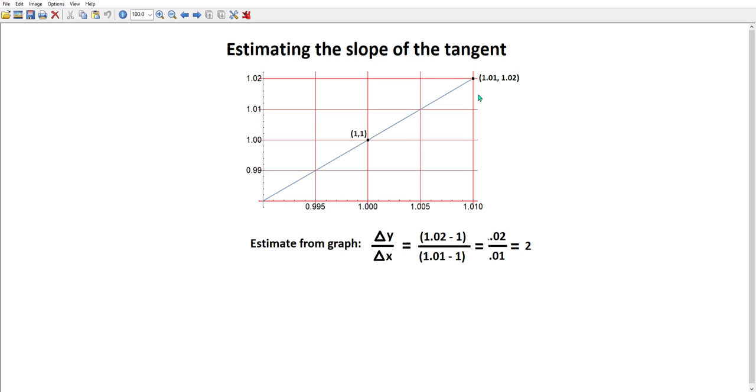1.02 minus 1 is your change in y, which is 0.02. 1.01 minus 1 is your change in x. And we get 0.02 over 0.01, which is 2, which is the estimate that we can make from this graph.